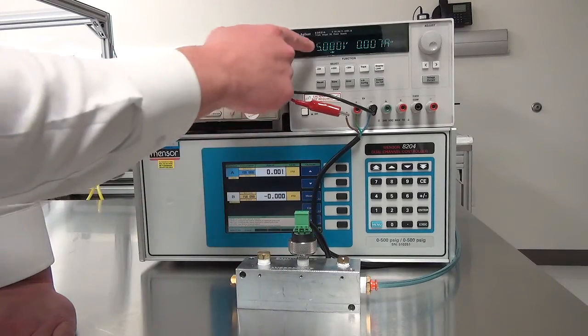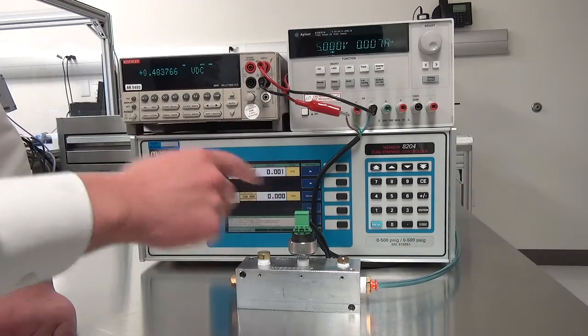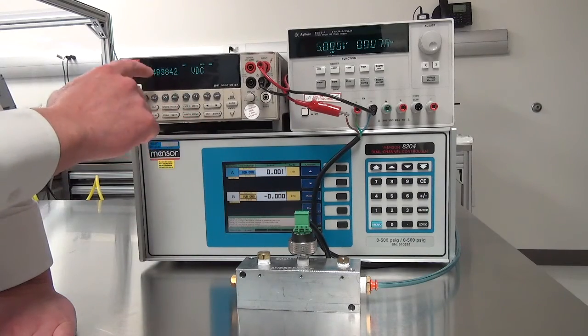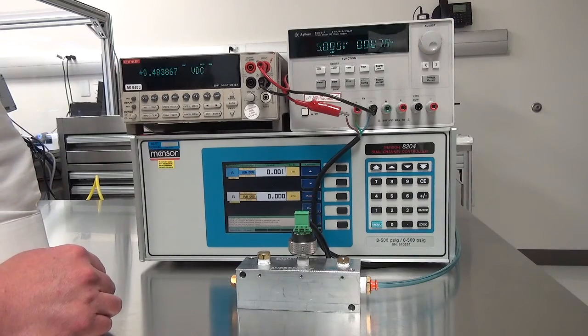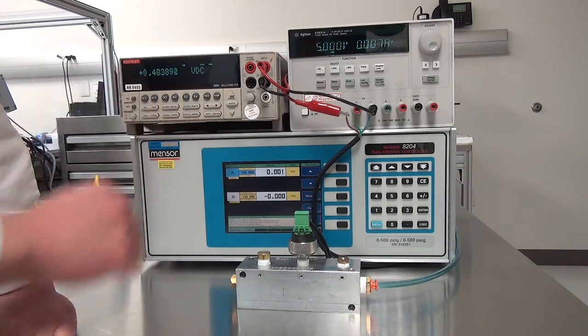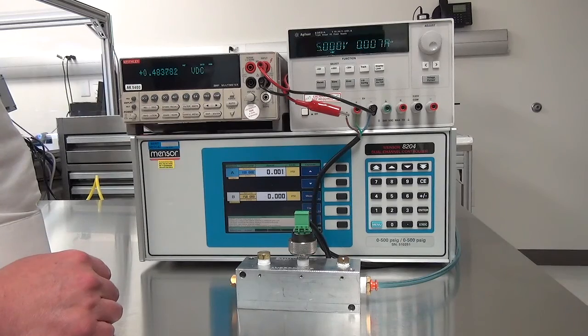You can see here that we've got 5 volts going to the sensor supply. Our target output, the calibrated output of 5 volts should be about 0.5 volts. Here we're sitting at 0.483 volts well within specification.